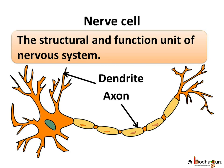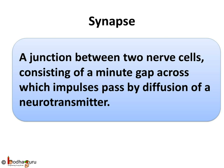So, to sum up what we learned today: a nerve cell is the structural and functional unit of the nervous system. And what is a synapse? A junction between two nerve cells consisting of a minute gap across which impulses pass by diffusion of a neurotransmitter is called a synapse. In the next lesson, we will understand what is a reflex action. Until then, bye-bye.